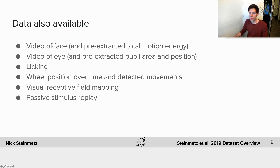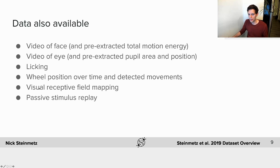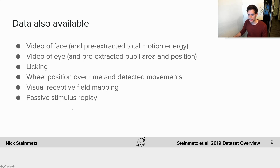In addition to those basic aspects, the dataset also includes video of the face and eye. From the face video we've pre-extracted total motion energy, giving an estimate of how much the mouse is moving in general. From the eye video we've pre-extracted pupil area and position. There's a trace of licking so you can tell when the mouse was licking, and of course wheel position over time and detected movements. There are also a couple of additional paradigms: visual receptive field mapping with a sparse noise stimulus, and passive stimulus replay in which gratings, clicks, and beeps from the task are replayed to the mouse after the task is done and the mouse can no longer earn rewards.